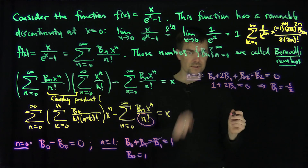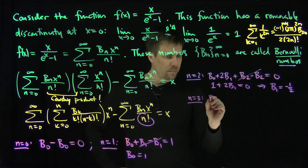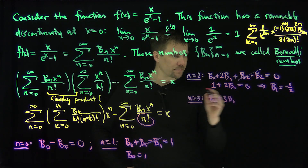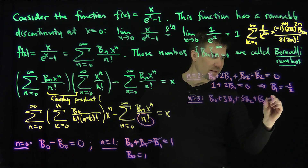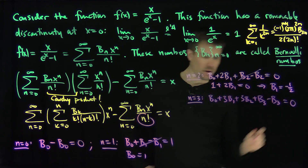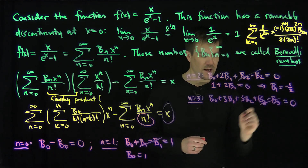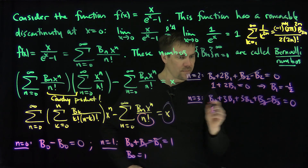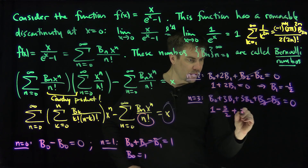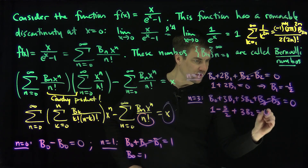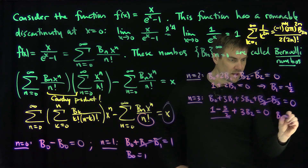Let's do one more step. For n equals 3, we get b_0 plus 3b_1 plus 3b_2 plus b_3, minus b_3, equals 0 — since there's no x cubed term on the right-hand side. The b_3 terms cancel. Substituting b_0 = 1 and b_1 = −1/2 gives 1 minus 3/2 plus 3b_2 = 0, so b_2 equals 1/6.